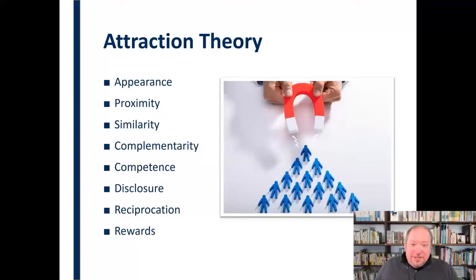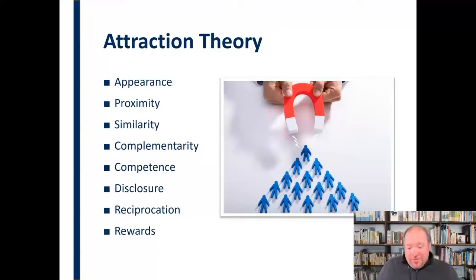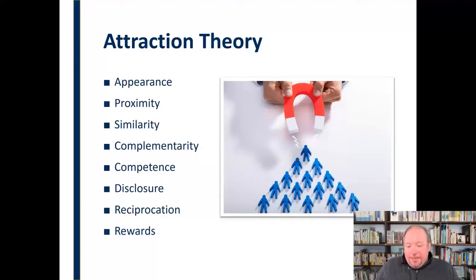Another factor — like appearance — that we don't like to talk about much, but we like rewards. Relationships bring rewards; they also have costs. We like relationships that seem like they're going to bring us rewards. It's not as shallow as it seems — those rewards could be material or emotional. We like people who generally seem like this is going to be a positive situation for us.